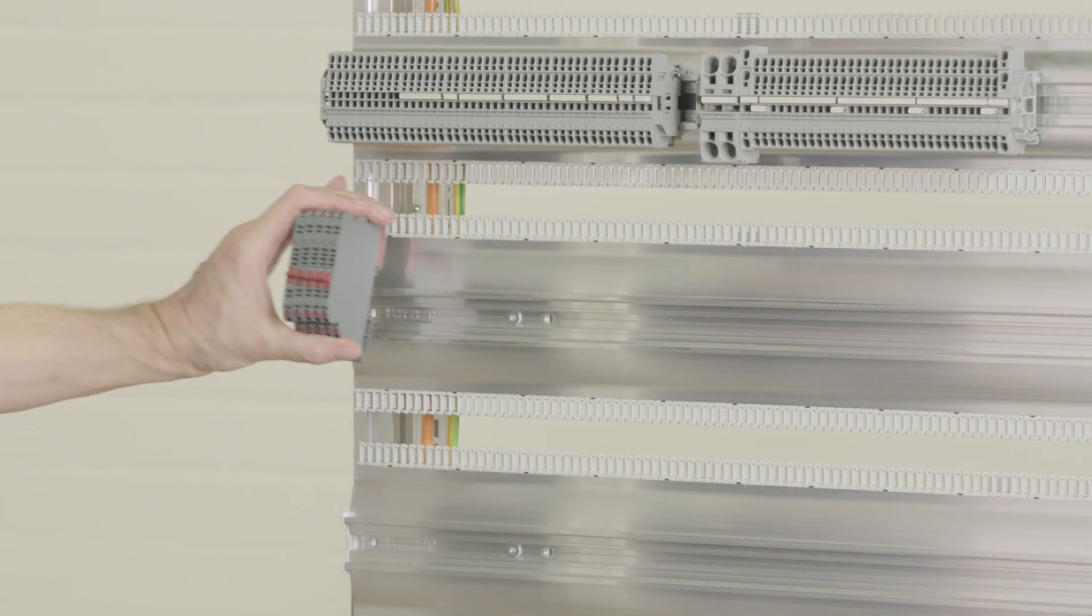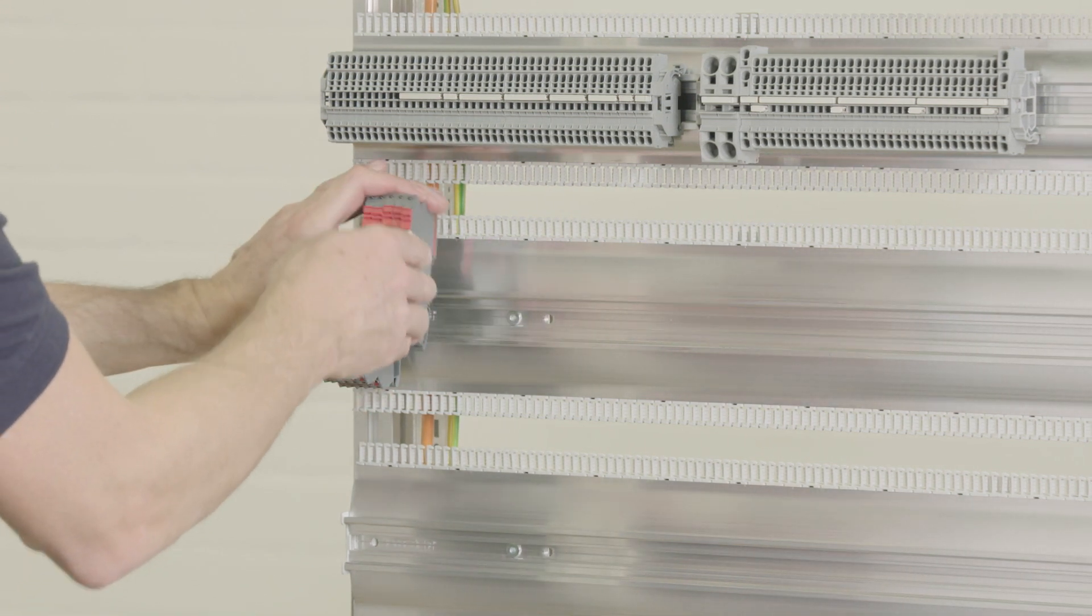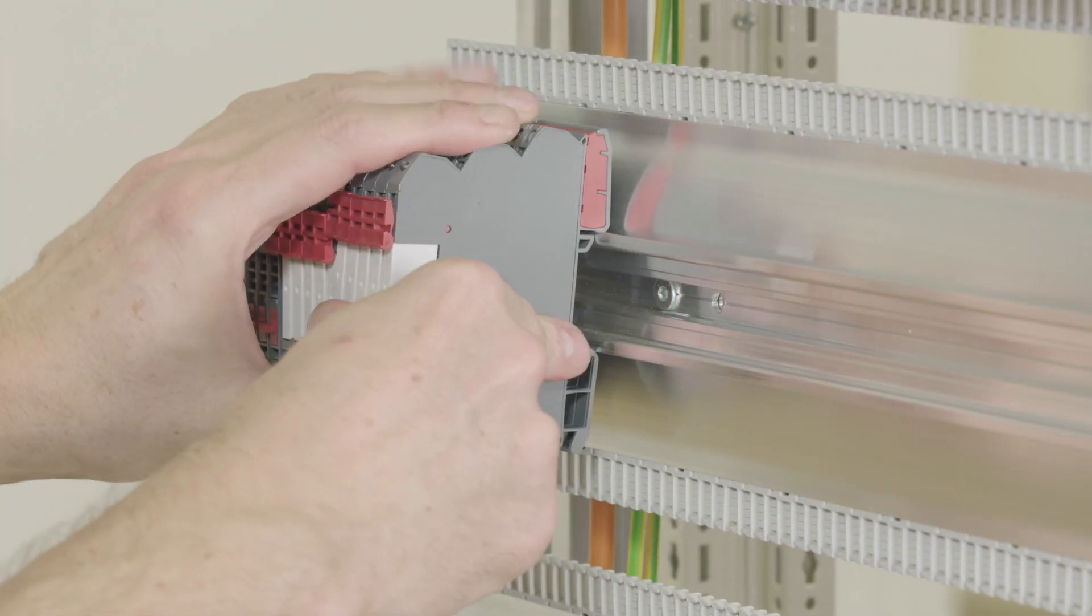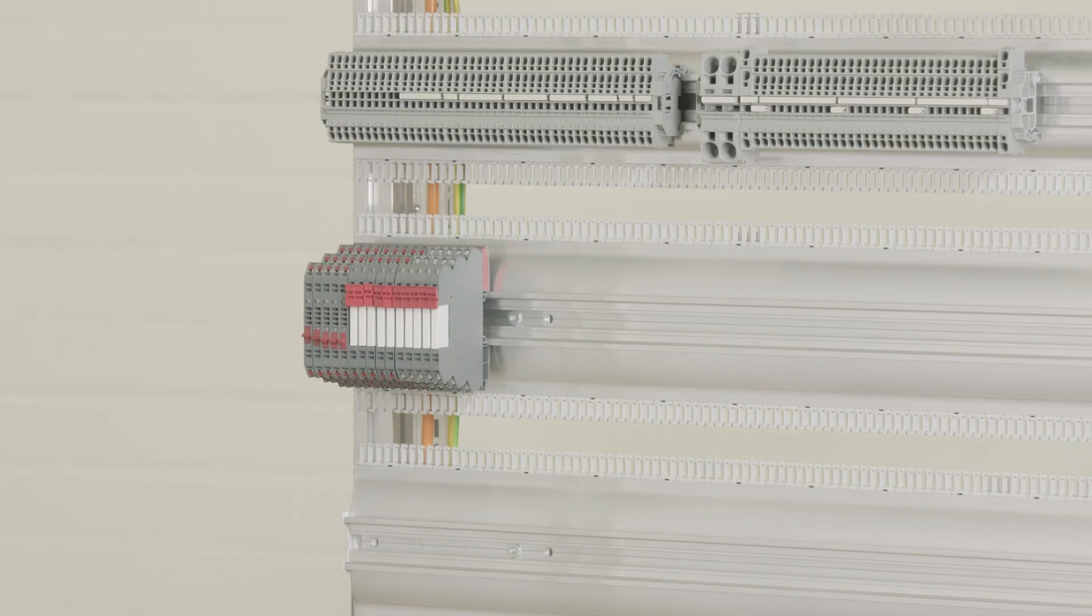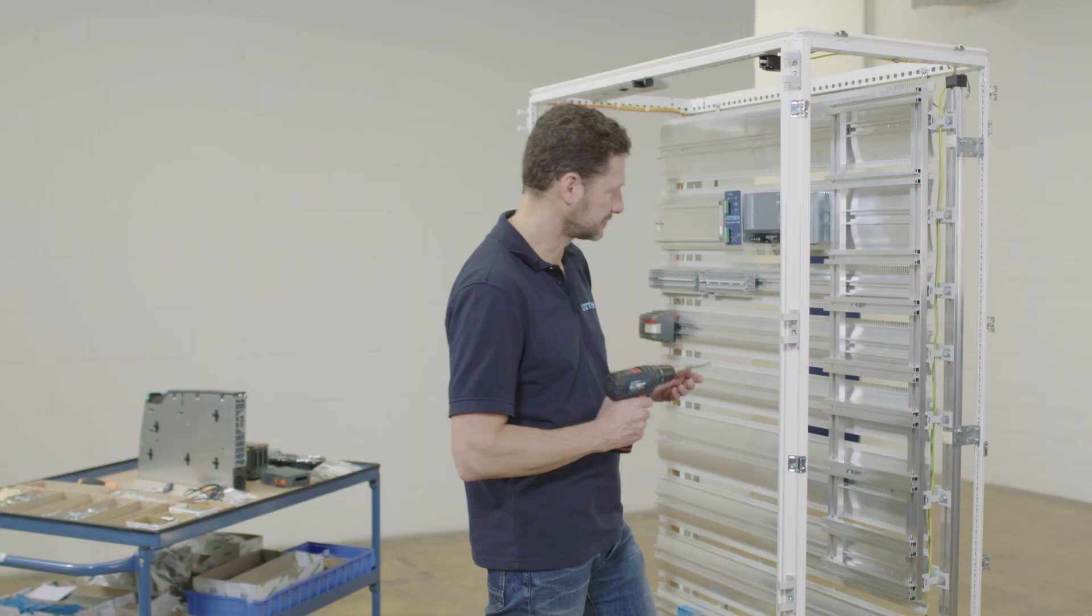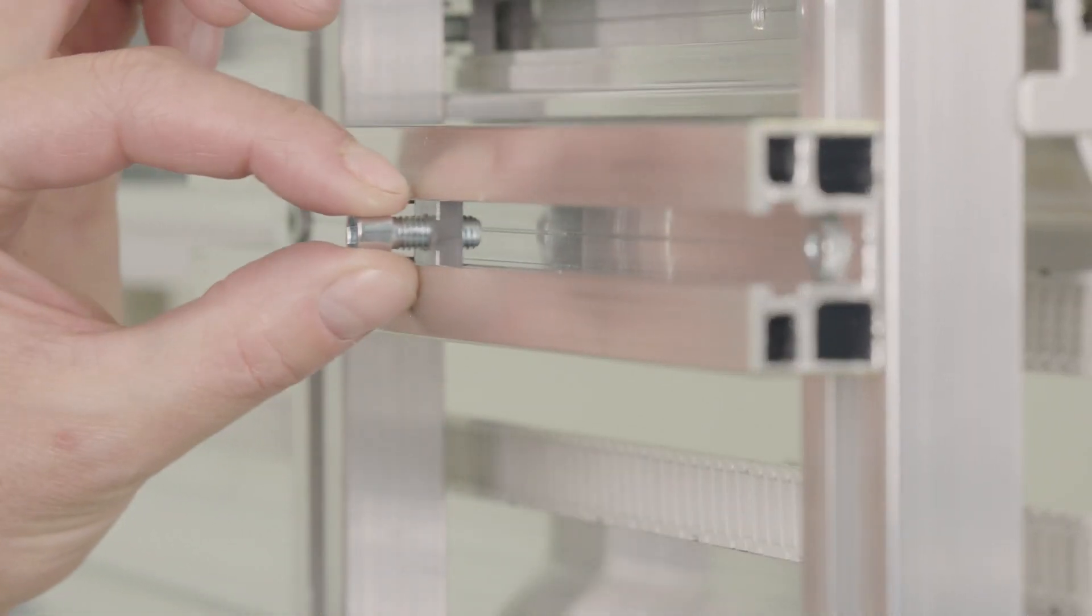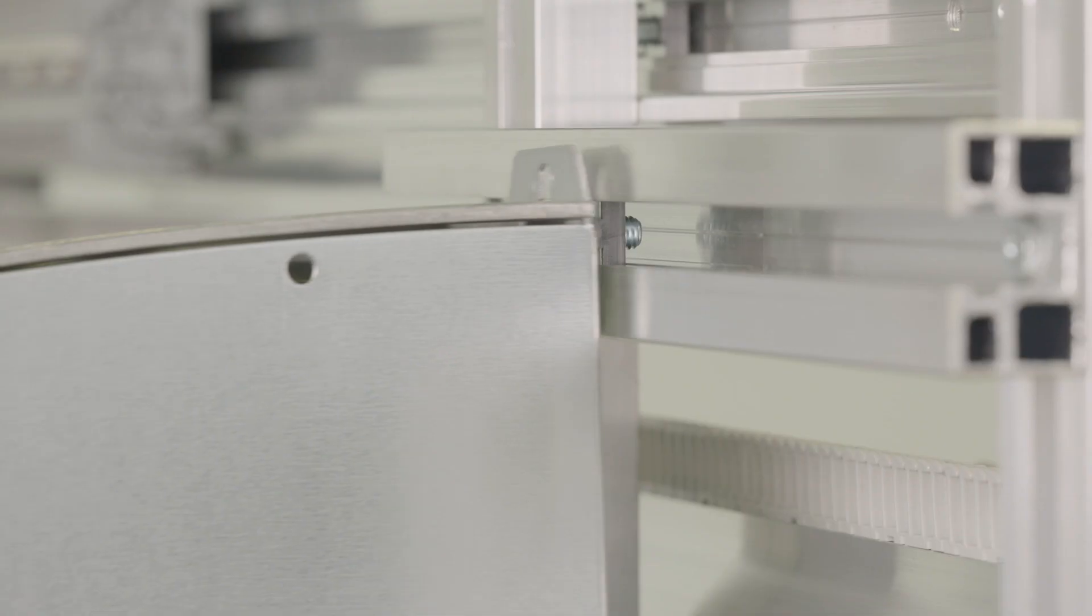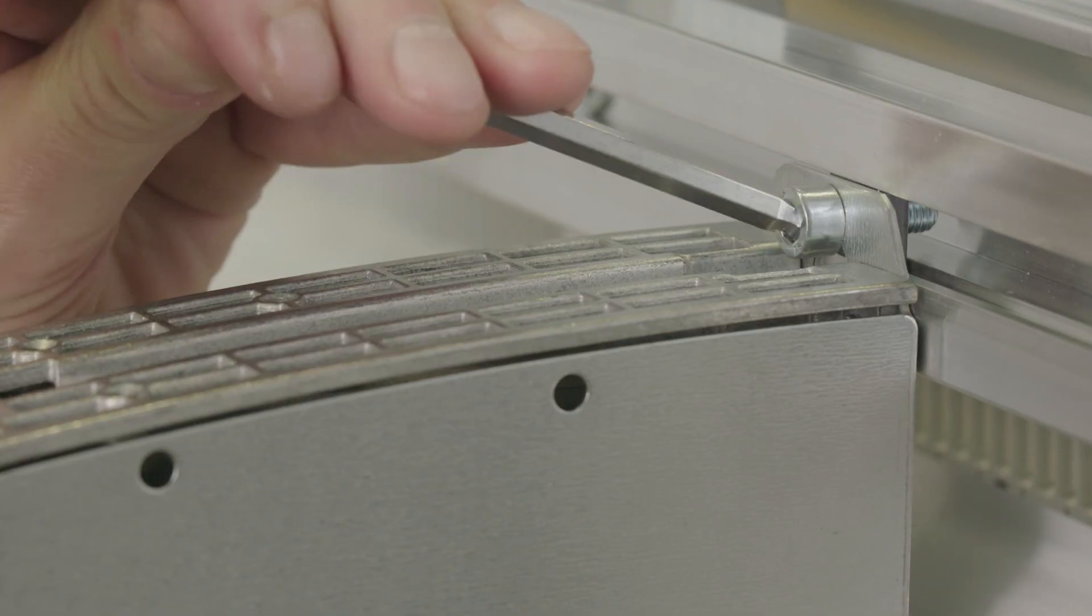The availability of aluminum profiles at differing heights allows the system to be adapted to the components. This allows the space to be utilized far more efficiently and offers a solution for almost all control components. All types of profiles have sliding nut channels which makes it possible to screw or hang the components effortlessly. Heavier components can also be fixed via adapter rail and the weight can be distributed over several modules.